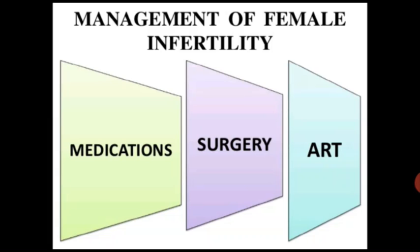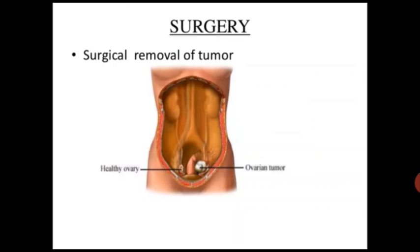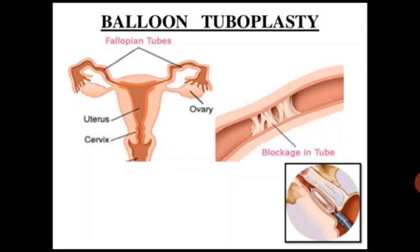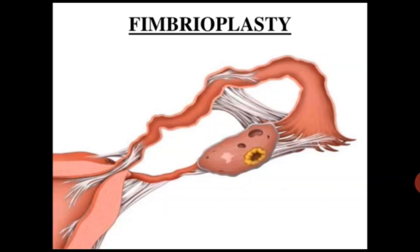Ultrasound pelvic examination is done for follicle monitoring. Medical and surgical management options include surgical removal of tumors of the ovary. Treatment of endometriosis can be performed in the same setting. Balloon tuboplasty can be used to remove blockage in the fallopian tubes. Fimbrioplasty is another surgical option.